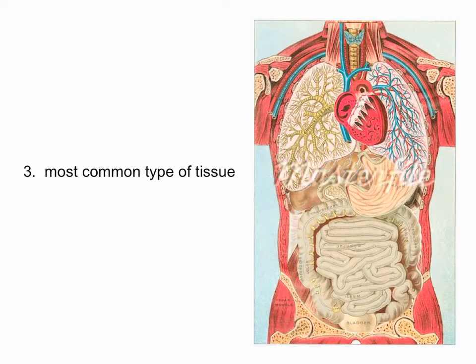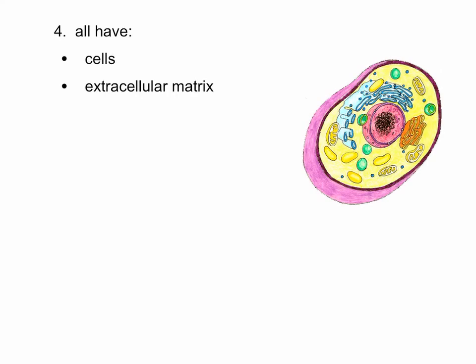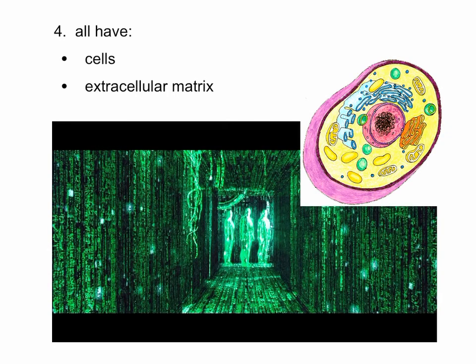We'll find connective tissues in bones in a couple of weeks. They all have two common characteristics from your textbook reading notes. Most people got the extracellular matrix part, but a lot of people left out the cells. So they all have cells, and they all have this extracellular matrix. We'll talk about each of those in more detail as we get further into this.